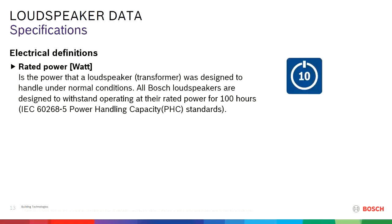Some electrical definitions. Rated power — if you see that, you also see the icon on the right, which says 10, meaning the rated power of that loudspeaker is 10 watts. It's basically the power that the loudspeaker was designed to handle under normal conditions. Our 100-volt and 70-volt loudspeakers have a transformer, and the transformer determines the power. You can also tap them down to a lower power. All our loudspeakers are tested for 100 hours at full power, and after that period the specifications should not be different than before.